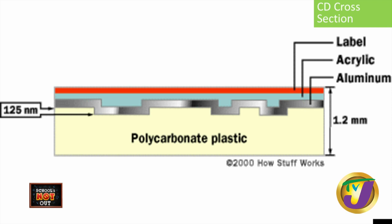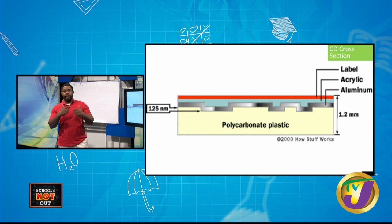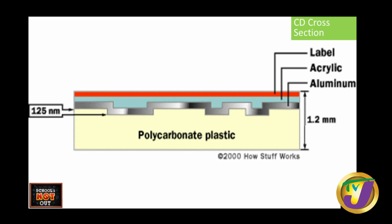A CD-ROM has a mylar or aluminum coating, and that is what the light reflects off of. When the light is beamed onto the surface, the reflection tells the device that a change has been made. Every time you see a hump or a dip, that is a change in reflection and represents a one. After that change is registered as a one, everything else is zero. That is how a CD works with laser light.